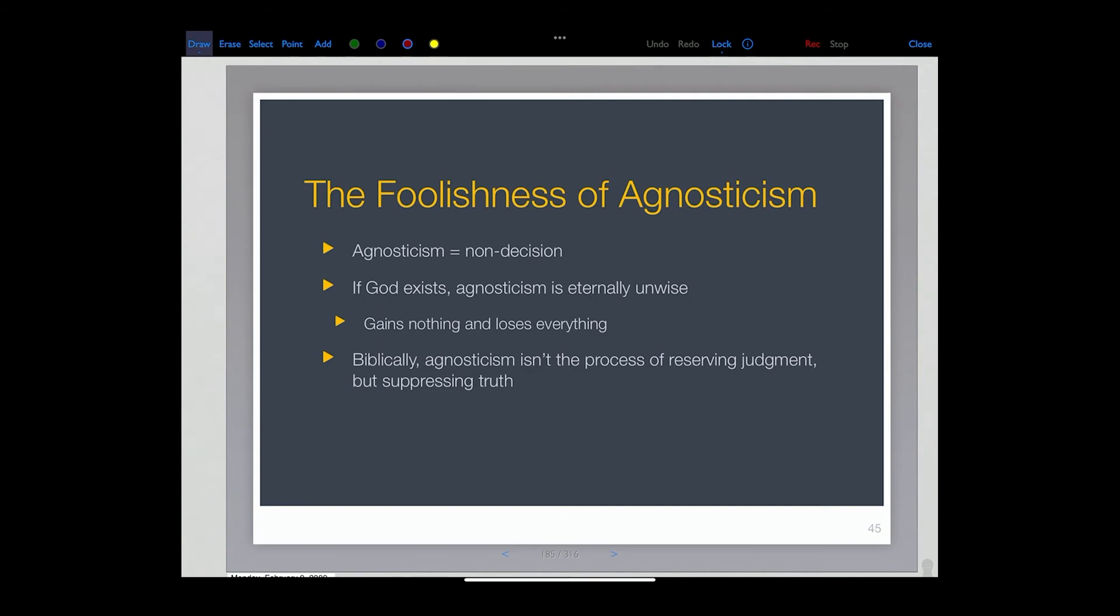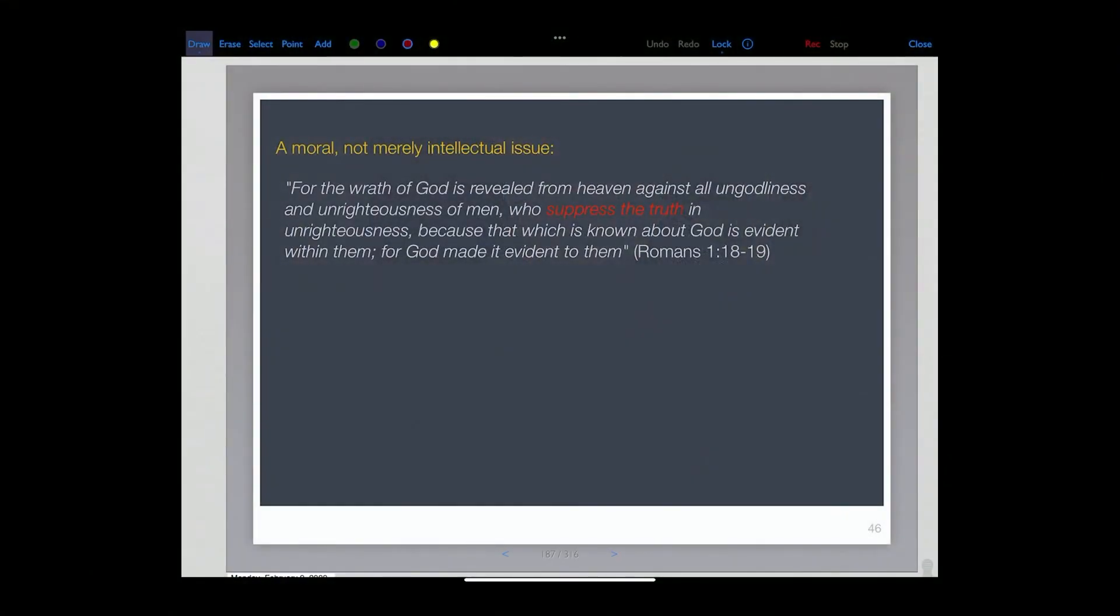And that's why the human heart is at enmity with God. That God had to pursue, really, a rebellious creature to actually desire, because he desires that transformation. He made it possible for us to do it. So I'm suggesting here, a moral, not merely intellectual reason, the wrath of God is revealed from heaven against all ungodliness and unrighteousness of men who suppress the truth in unrighteousness. Because that which is known about God is evident within them, and God made it evident to them.